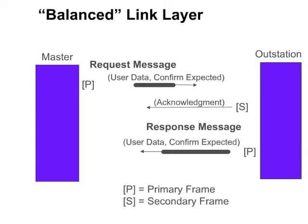Next, the outstation sends an application response message. Although this is a response at the application layer, at the link layer the outstation is initiating the message. Therefore, the PRI bit will be set. The DIR bit is not set, however, since this message is from the outstation. Since the slave requested link layer confirmation, the master sends an acknowledgement. The acknowledgement is a link layer secondary message, so the PRI bit will not be set. However, the DIR bit will be set since this message is from the master.